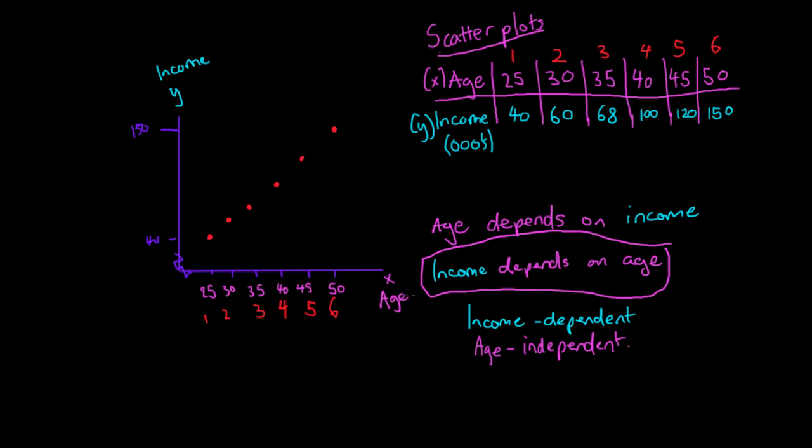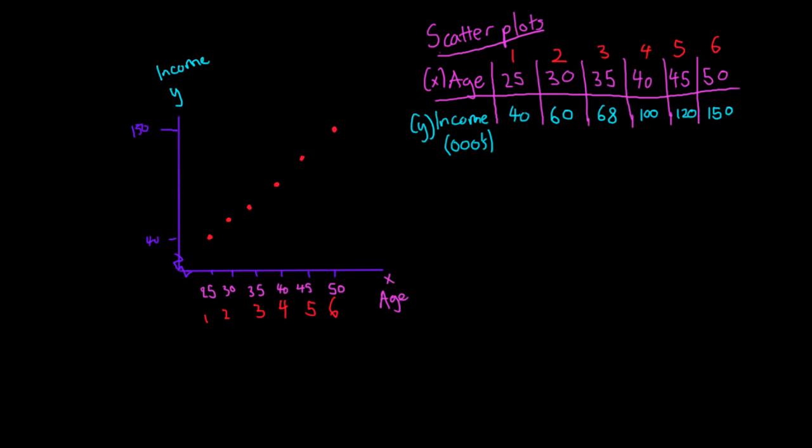The reason we like scatter plots is because they're very handy and let us display data to see what's happening with the relationship. We can see here that, as we would expect, as age increases, income likely increases. This is the kind of conclusion that scatter plots let us draw.